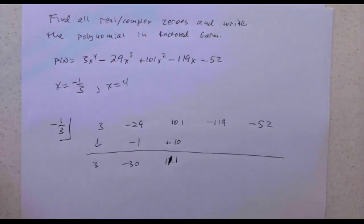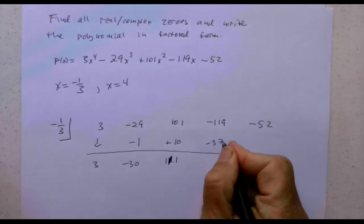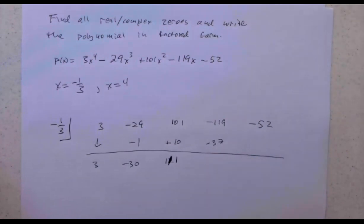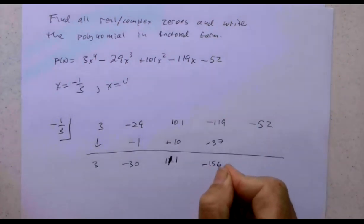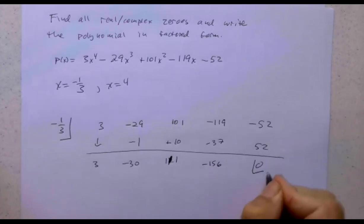Negative a third times 111 is -37. So -119 plus -37 is -156. And then I get negative a third times -156, which gives me 52. Yay. That is a zero. So negative one third indeed is a zero.